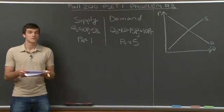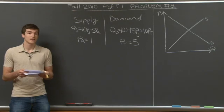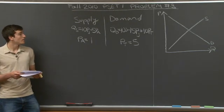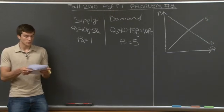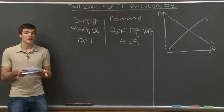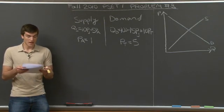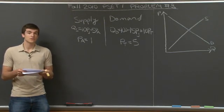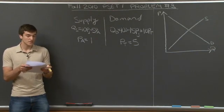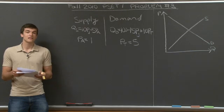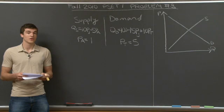Consider the market for apple juice. In this market, the supply curve is given by quantity supplied equals 10pj minus 5pa, and the demand curve is given by quantity demanded equals 100 minus 15pj plus 10pt, where j denotes apple juice, a denotes apples, and t denotes tea. Part A asks us to assume that pa is fixed at $1 and pt equals 5, and we need to calculate the equilibrium price and quantity in the apple juice market.